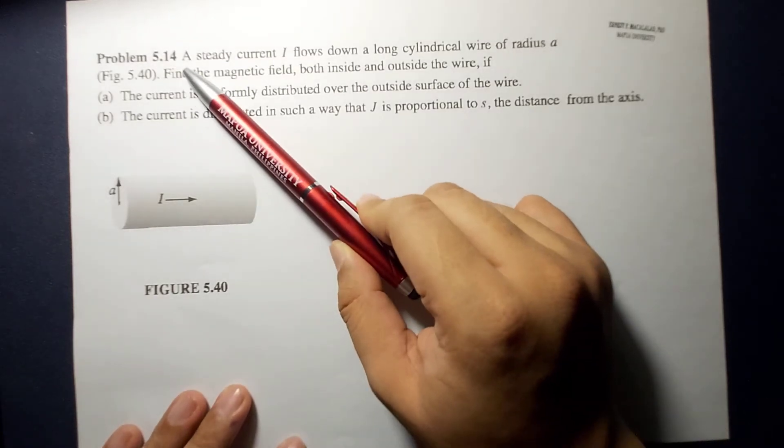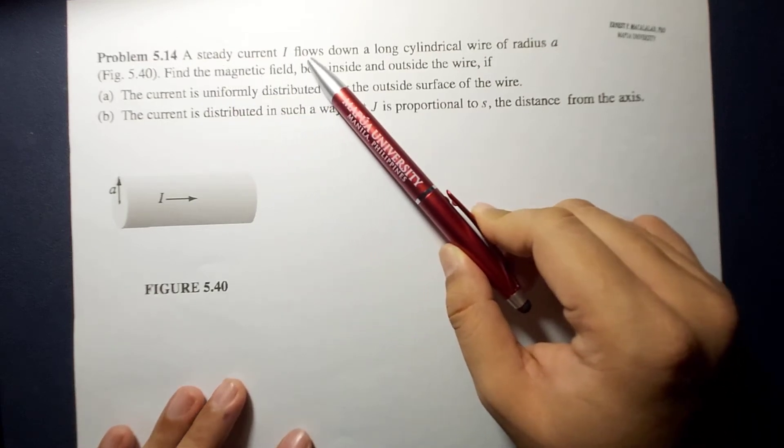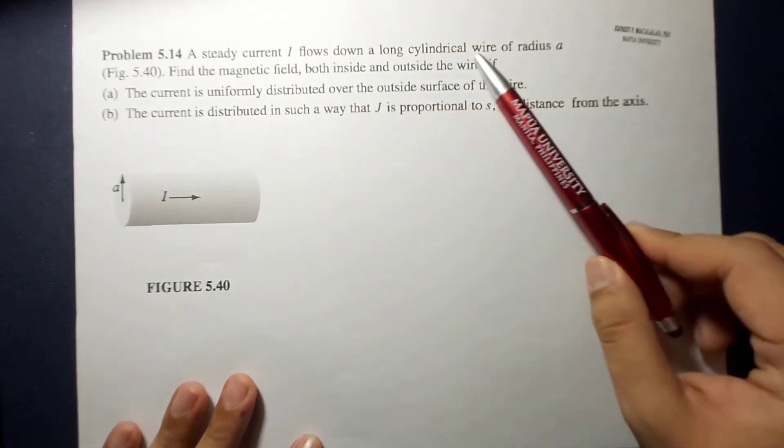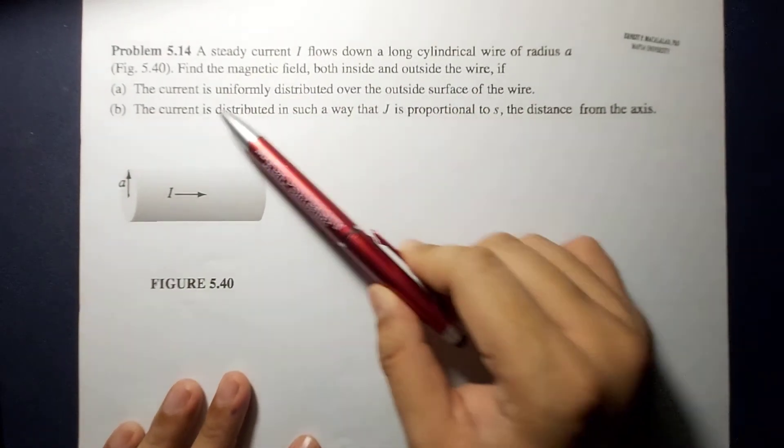and today we're going to solve a problem involving Ampere's law. The problem reads, a steady state current flows down along cylindrical wire of radius A,